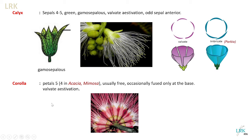Regarding the corolla, petals are five in number, but in Acacia and Mimosa they are four in number, as these are tetramerous. Usually the petals are free — that is why we place Mimosoideae in Polypetalae. Occasionally the petals are fused at their base but free at their tips. They also show valvate aestivation.